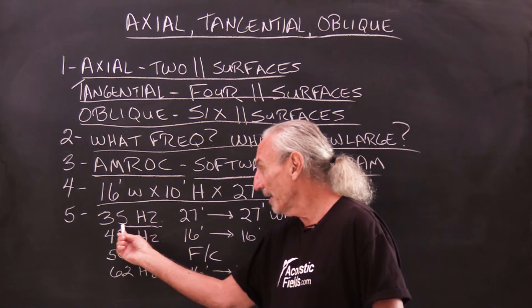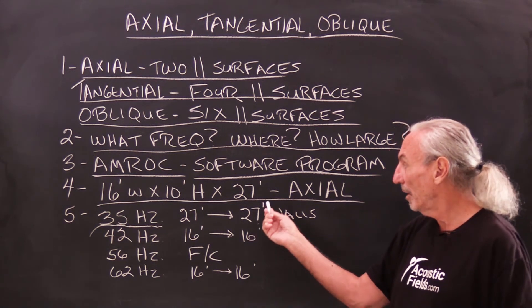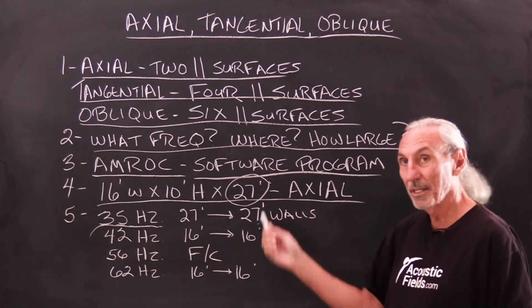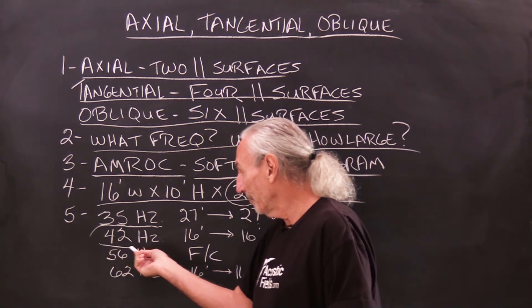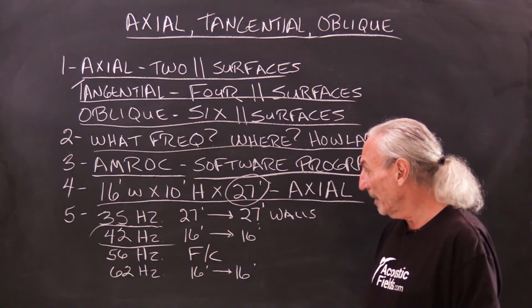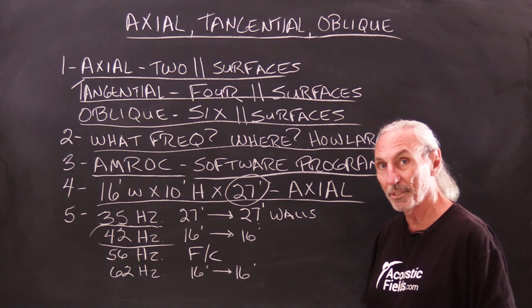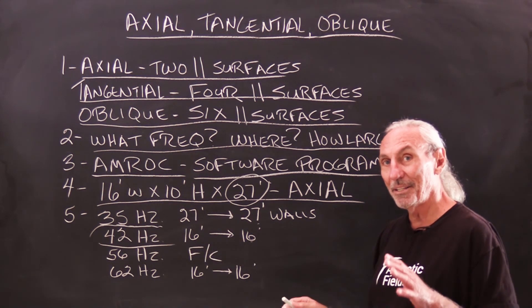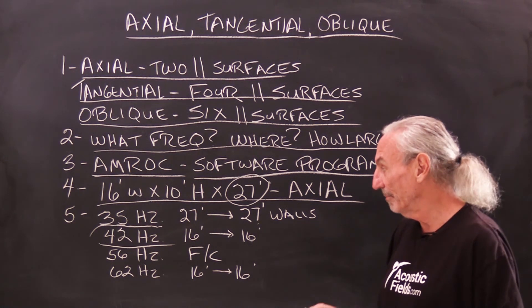So at 35 cycles, we have a 27 foot wall, the length issue. And then just seven cycles later, we have a 16 foot to 16 foot problem at 42 cycles. So you can see that length and width already are problematic in this room.